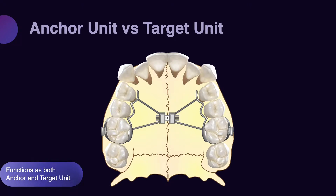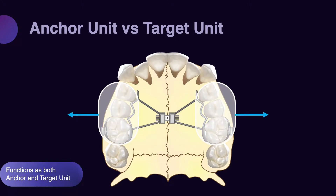Let's have an example of anchor unit when both segments move equally. Assume we have an expander and we apply a force on both sides — action. The other side also receives the reaction force of that action. So each segment of the expander acts as both target and anchor. You cannot say one side is target and the other side is anchor. Both of them equally act as anchor unit and target unit, and supposedly they move similarly, even though not always.